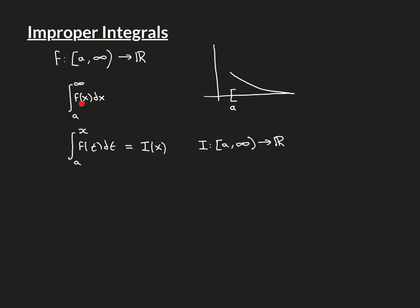For many functions f, if you construct i(x) it will start at zero at a and then get bigger and bigger, probably unbounded. However, for some functions f it might be the case that i(x), as x gets bigger and bigger, actually approaches some value — i.e., i(x) has a limit as x approaches infinity. Those are the functions f for which the integral from a to infinity is something sensible we can define.